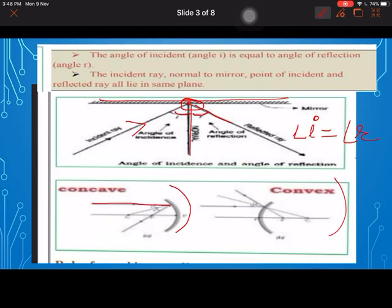So any ray of light which is coming parallel to the principal axis is converged at the focus. And any ray of light which is parallel to the principal axis is diverged, but when extended it will go and meet at the focus.